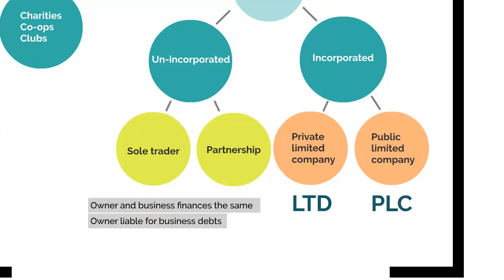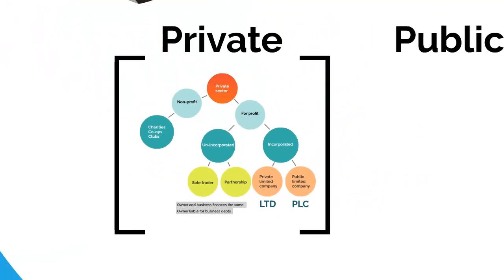Now we talk about a private limited company and a public limited company — but what's the 'limited' about? It's all about your own personal liability as an owner. If you put in a hundred pounds to start your business and your business becomes insolvent, your liability to pay back those debts is limited to how much you put in — that one hundred pounds. So that's the private sector.